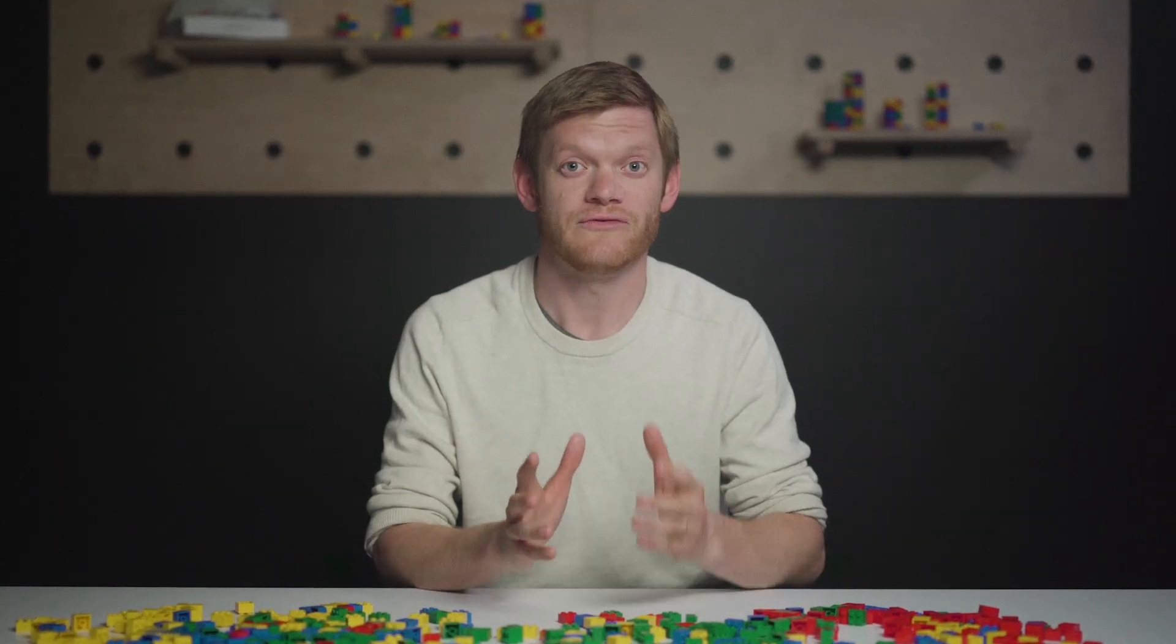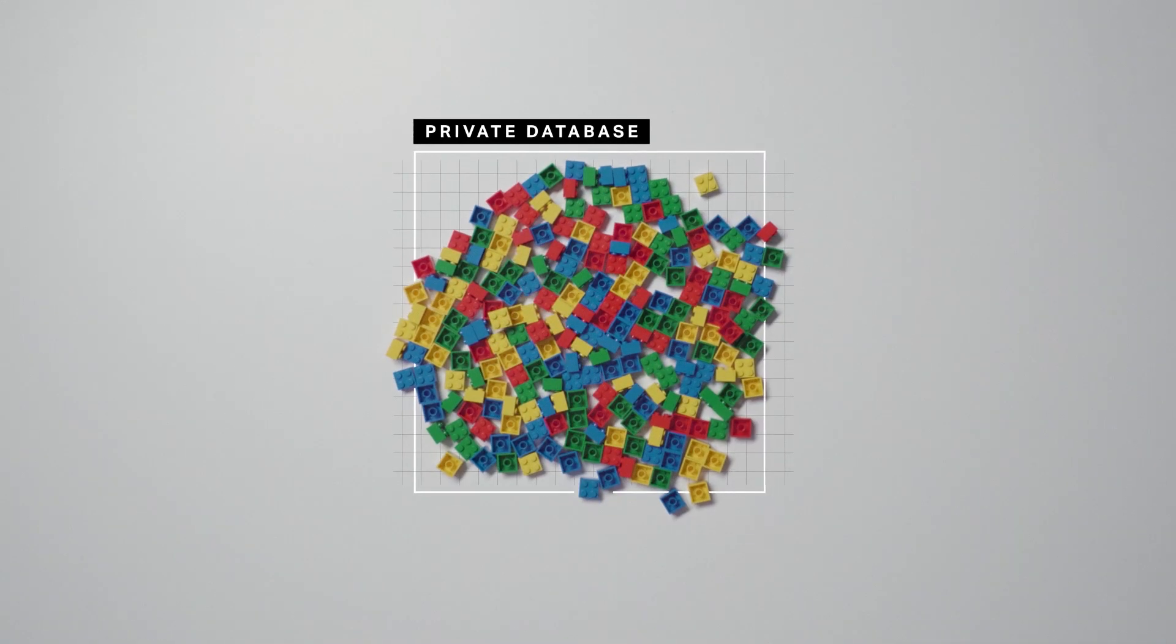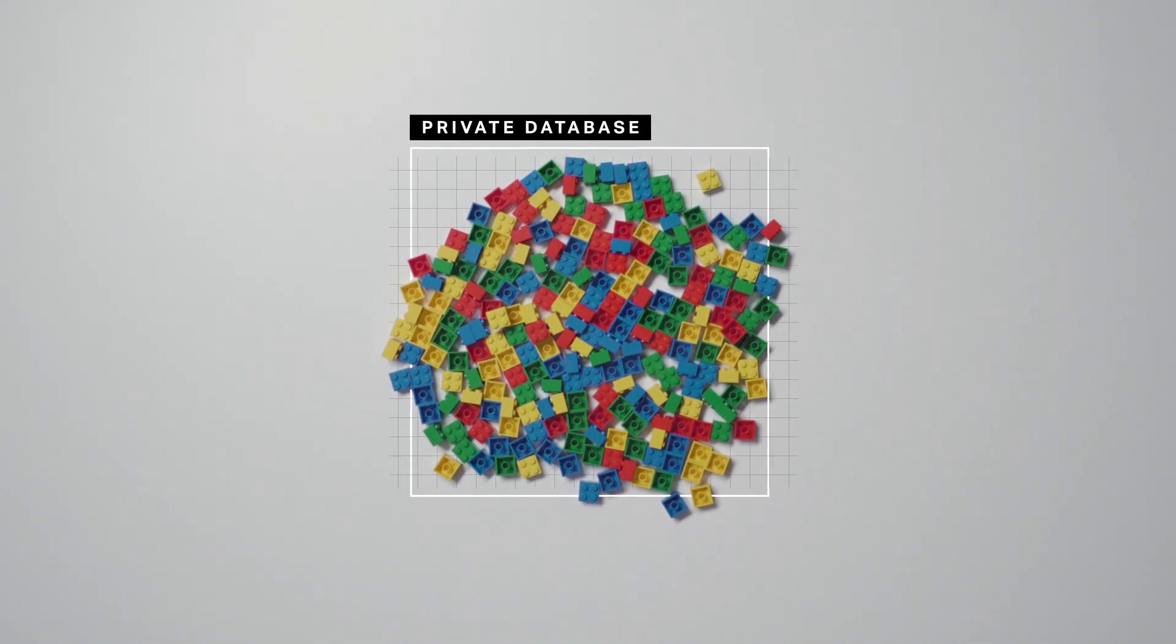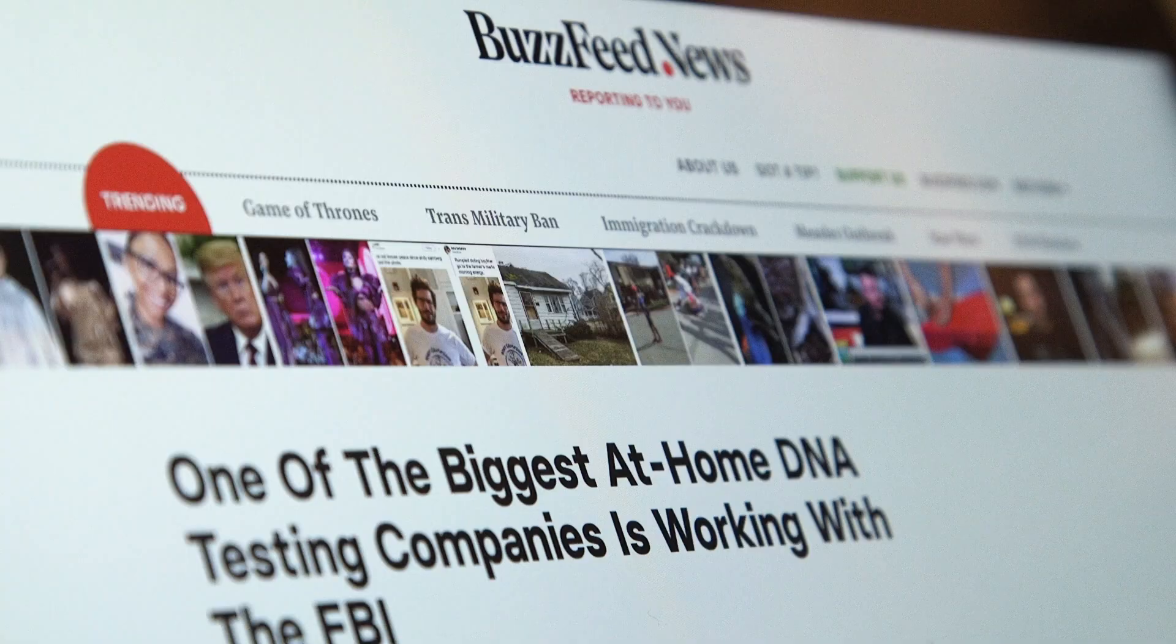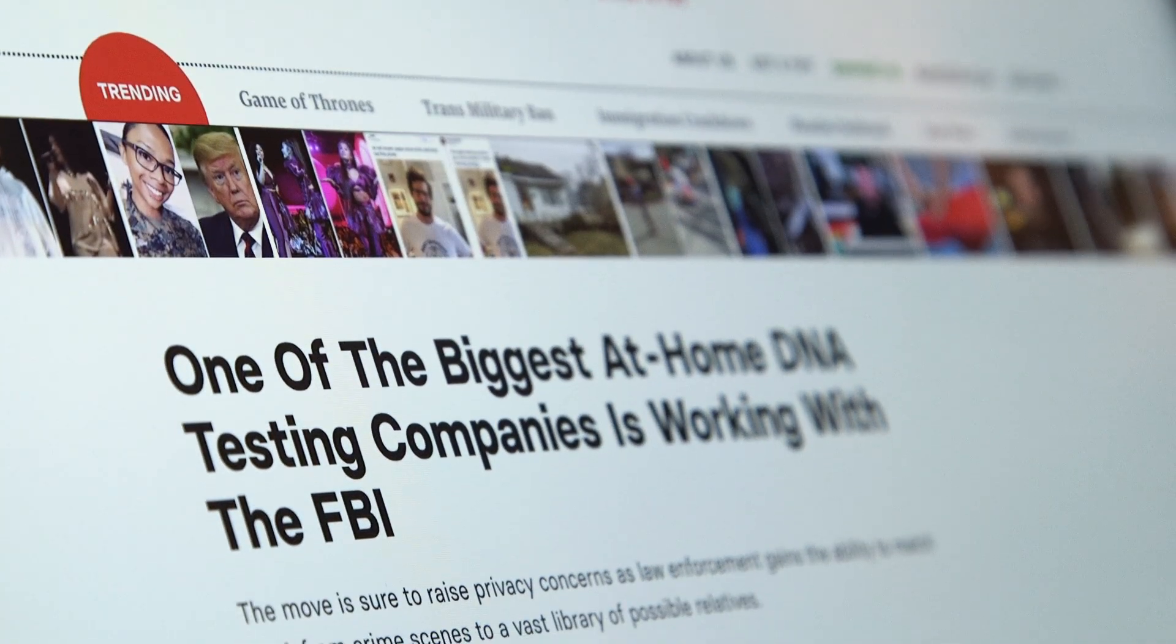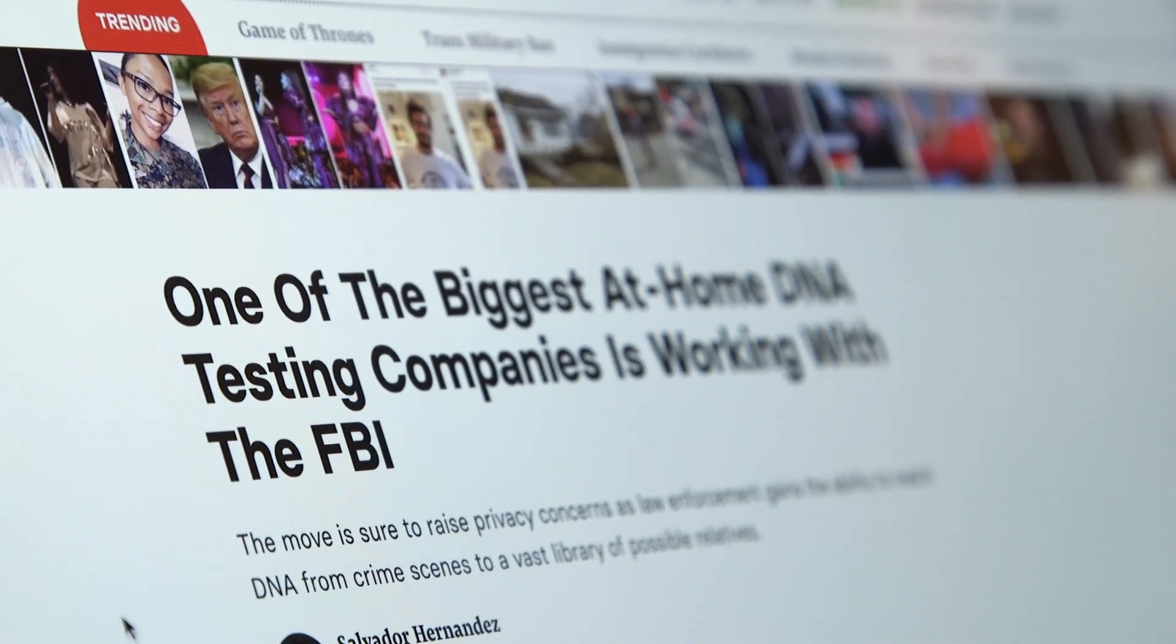Investigators working a case have a few options for doing a genetic search. First, they could search through a testing company's private database — if they can gain access. Family Tree DNA was in the news recently for actively working with law enforcement. 23andMe says that it won't do that, but there's always the threat of a court order. So that route is tricky.